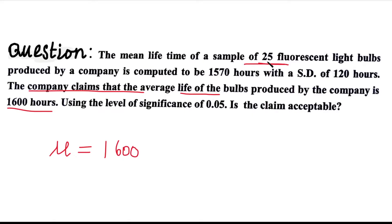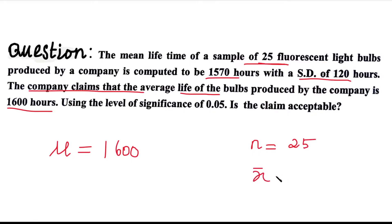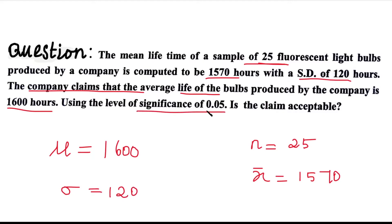But when 25 light bulbs were checked, the average lifetime of those 25 light bulbs was found to be 1570 hours. So sample size n = 25, sample mean x̄ = 1570, and standard deviation σ = 120. Level of significance is 5%, that is 0.05.